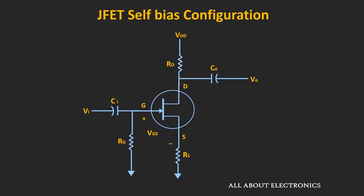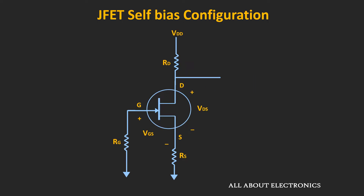The circuit diagram shown here is the self-bias configuration of the JFET used for linear amplification of an AC signal. Since we are interested in finding the DC operating point, we consider all AC sources as zero and all coupling capacitors as open circuits. For the DC analysis, the equivalent circuit will look like this.